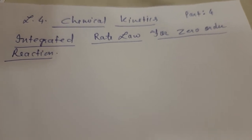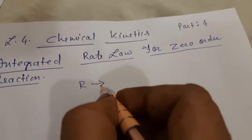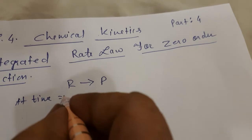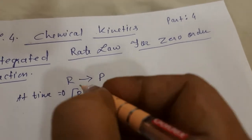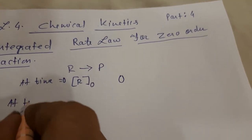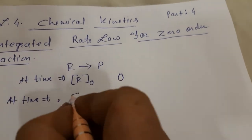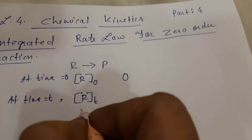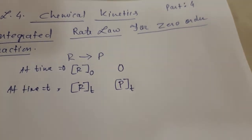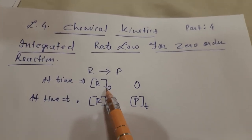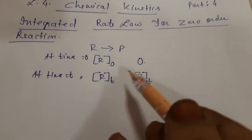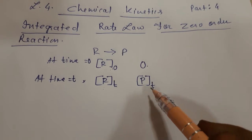Consider a reaction: Reactant → Product. At time t = 0, the concentration of reactant is R₀ and product has not yet formed, so product concentration is zero. At time t, the concentration of reactant becomes Rₜ and the product concentration becomes Pₜ. So initially reactant concentration is R₀, product is zero, and as the reaction continues, reactant decreases and product forms.